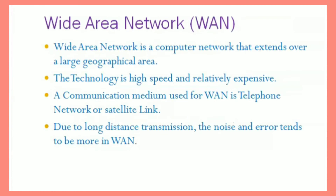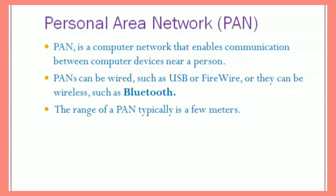The next type is WAN, the Wide Area Network. WAN is a computer network that extends over a large geographical area. The technology is high speed and relatively expensive. It might be confined within the bounds of a state or country. A WAN could be connections of LANs connecting to other LANs via telephone lines and radio waves. The communication medium used for WAN is telephone networks or satellite links. Due to long distance transmission, noise and errors tend to be more in WAN.